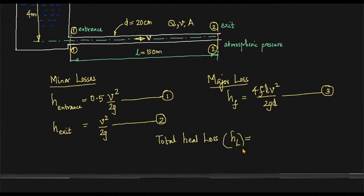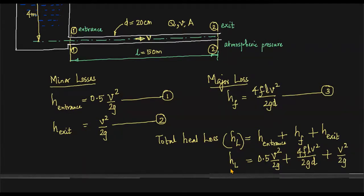Total head loss is entrance from the tank to the pipe, so there will be loss because the streamlines converge. Second one is the loss due to friction HF, that is a major loss. And again at the exit, entire kinetic head is lost. So HL is equal to H entrance is 0.5 V square over 2G, then HF is 4FLV square divided by 2GD, plus H exit, complete kinetic head of water at the exit, that is V square by 2G. This is the equation.